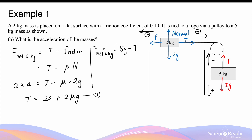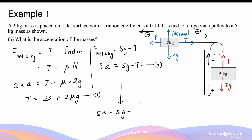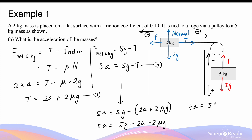The net force acting on the 5kg mass can also be written as its mass multiplied by its acceleration using Newton's second law, so: 5A = 5g − T. This is our second equation. We can solve these simultaneously by substituting the tension expression from the first equation: 5A = 5g − (2A + 2μg), which gives 7A = 5 × 9.8 − 2 × 0.1 × 9.8. Acceleration equals 6.72 meters per second squared.